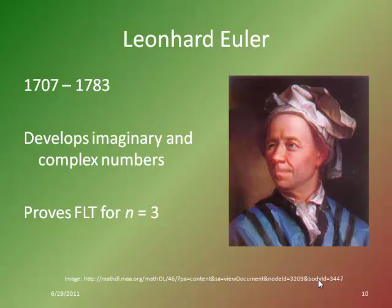While Euler proved the case for n equals 3, one of his more important contributions to solving Fermat's Last Theorem is his development of the imaginary and complex number system. Up until that point, negative radicals had been treated as useless — something to be discarded. Instead, Euler said those are important and tell us something about the numbers, so we should hold on to them and find a usable way to work with them.